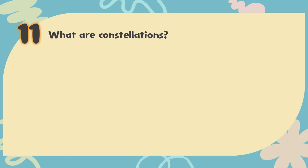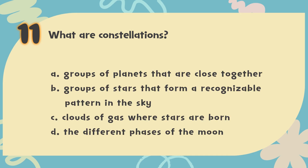Number 11. What are constellations? The choices are: A. Groups of planets that are close together. B. Groups of stars that form a recognizable pattern in the sky. C. Clouds of gas where stars are born. D. The different phases of the moon.